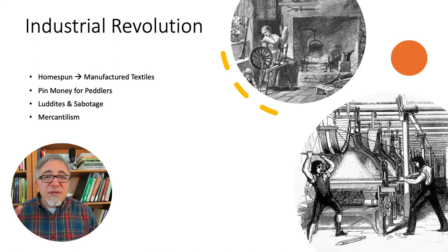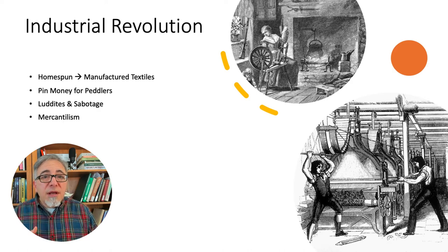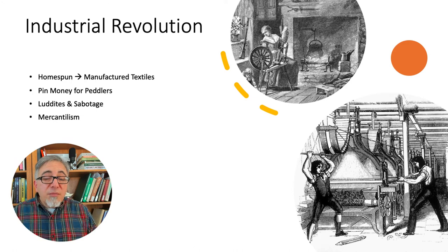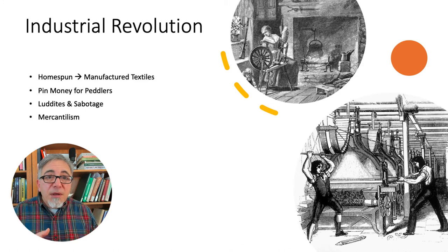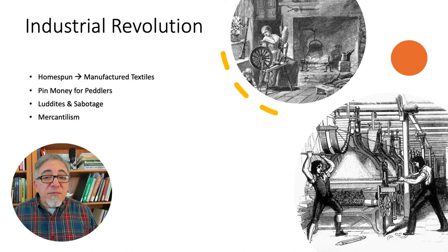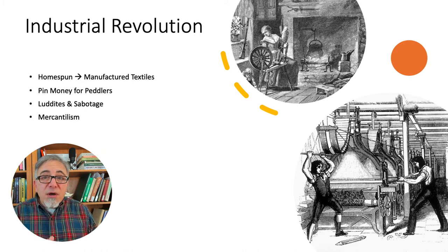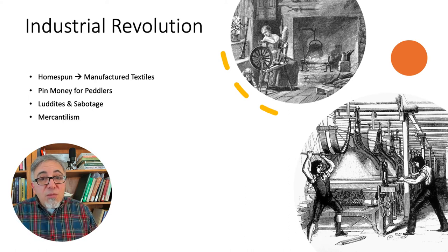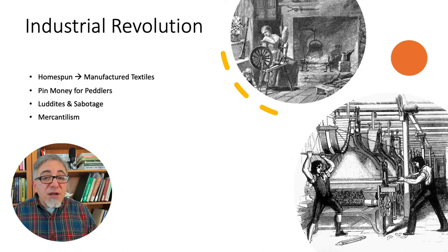Agricultural improvements in the previous century and the introduction of new staple crops, like the potato that had been imported from the Americas, also produced more food using less labor. Improved nutrition allowed Britain's population to grow and increased the number of people available to work in factories. With a larger population involved in a wage economy, producing goods for others and not for themselves, Great Britain also created consumers for the textiles and foods and other products manufactured in these new factories.